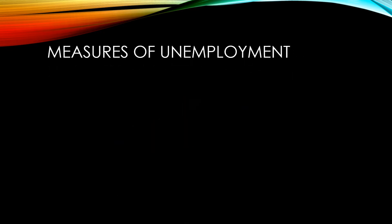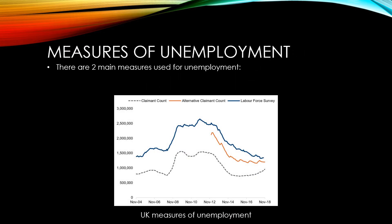There are different methods that can be used to measure unemployment. The two main methods used in the UK are the claimant count and labour force surveys. The claimant count measures the number of people receiving unemployment benefits from the government. The orange line here shows an alternative claimant count available since 2012, illustrating that the methodology used can make a big difference in the reported number of unemployed.